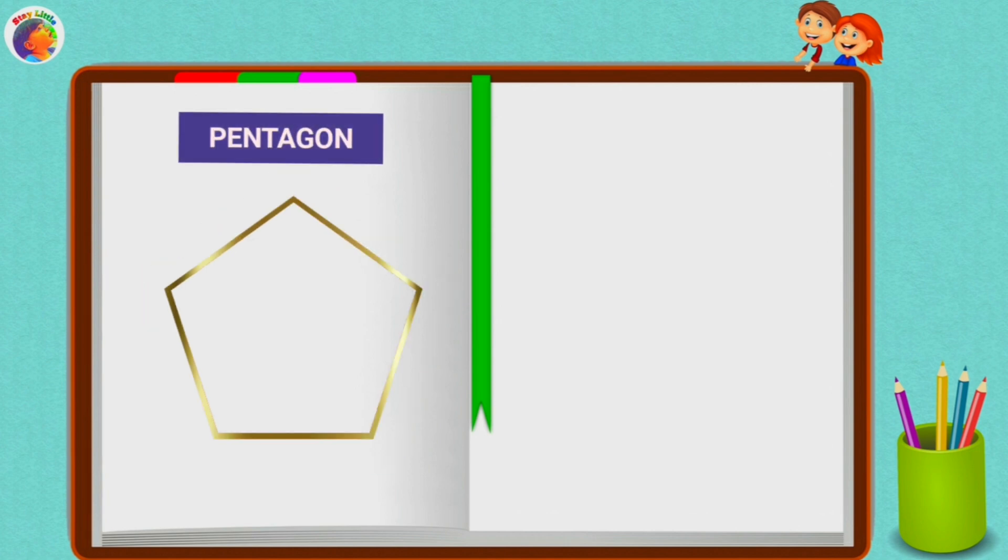Pentagon. A pentagon has five sides. 1, 2, 3, 4, 5. And five corners.